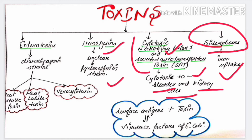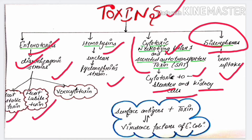E. coli is divided into different strains according to what it causes in the host body. For example, if it causes diarrhea it is called a diarrhoeagenic strain. We will discuss these strains in detail further. Focusing on toxins, enterotoxin is mostly possessed by diarrhoeagenic strains and is divided into three types: heat-stable toxin, heat-labile toxin, and verocytotoxin.